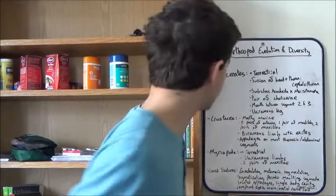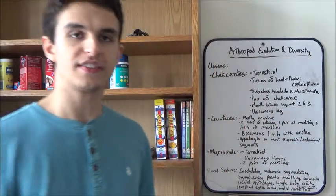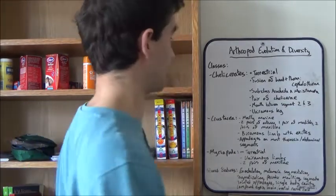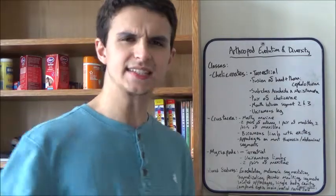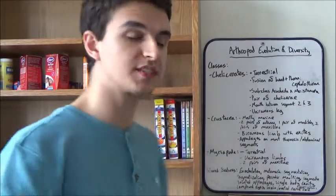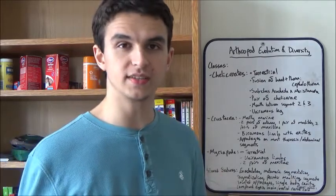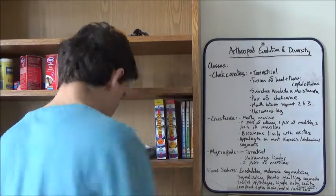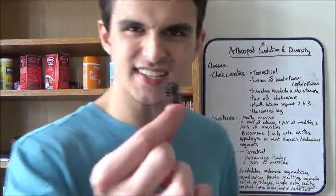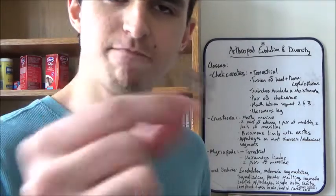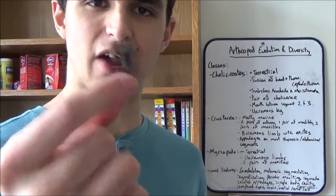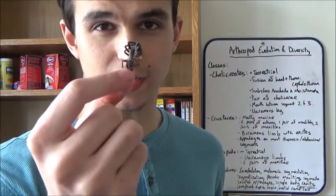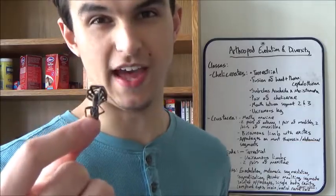The first one is the chelicerates, or class Chelicerata. The chelicerate includes the ticks, the mites, the scorpions, the harvestmen, the pseudoscorpions, camel spiders, horseshoe crabs, and of course the true spiders. This is a tube web spider which I found in Bath about six months ago and I've had it in my room ever since. If there are any arachnophobes out there, it's coming for you.